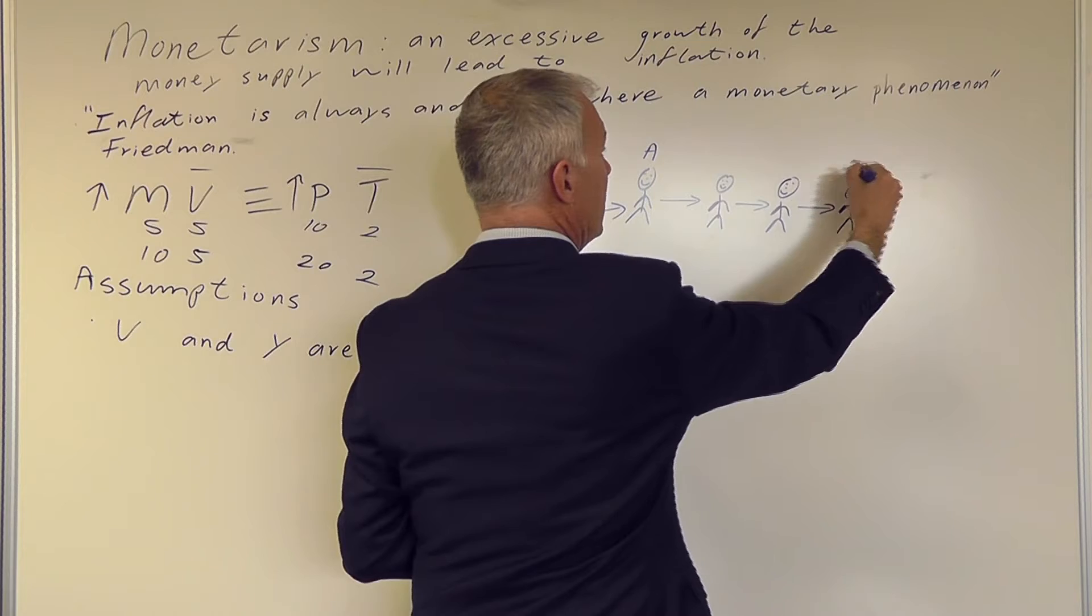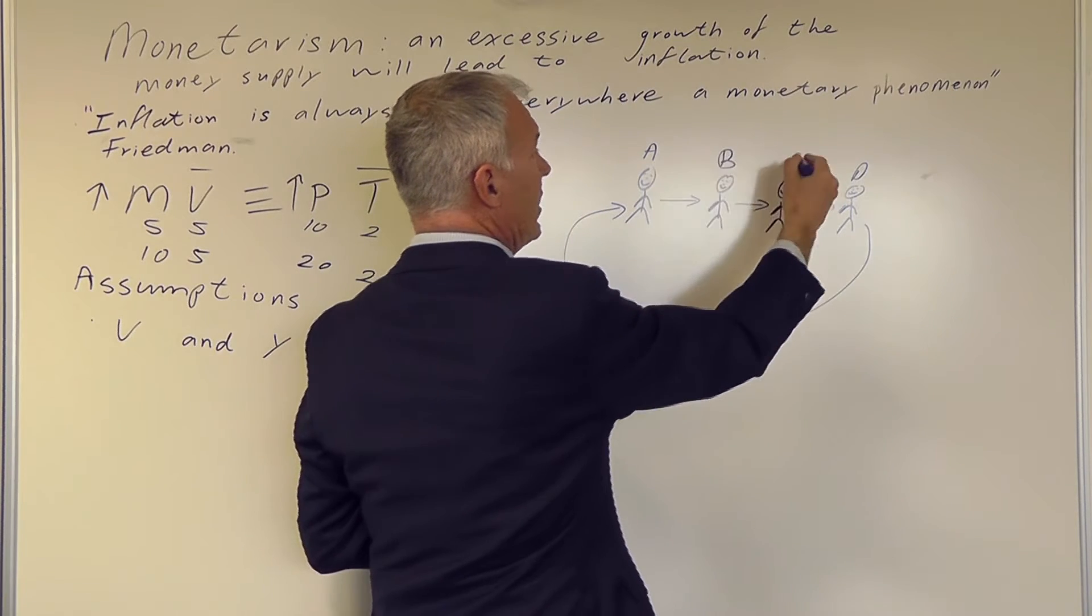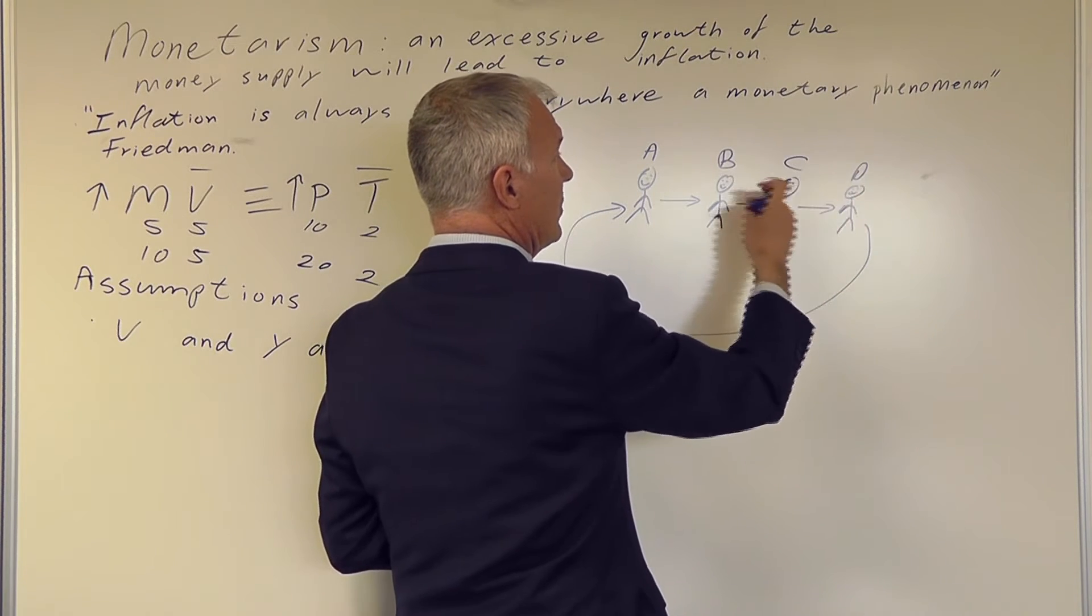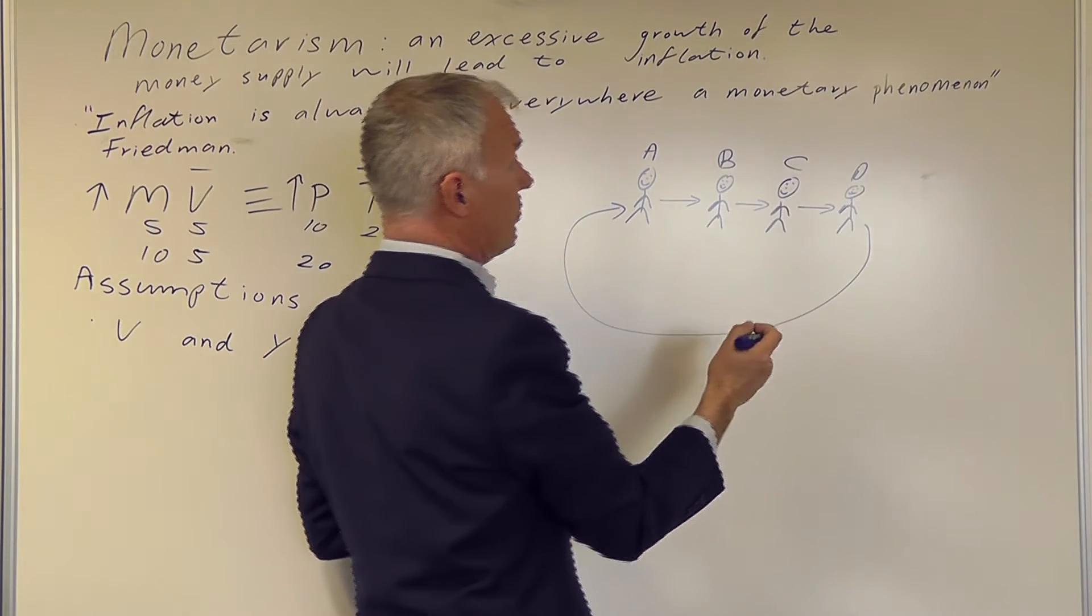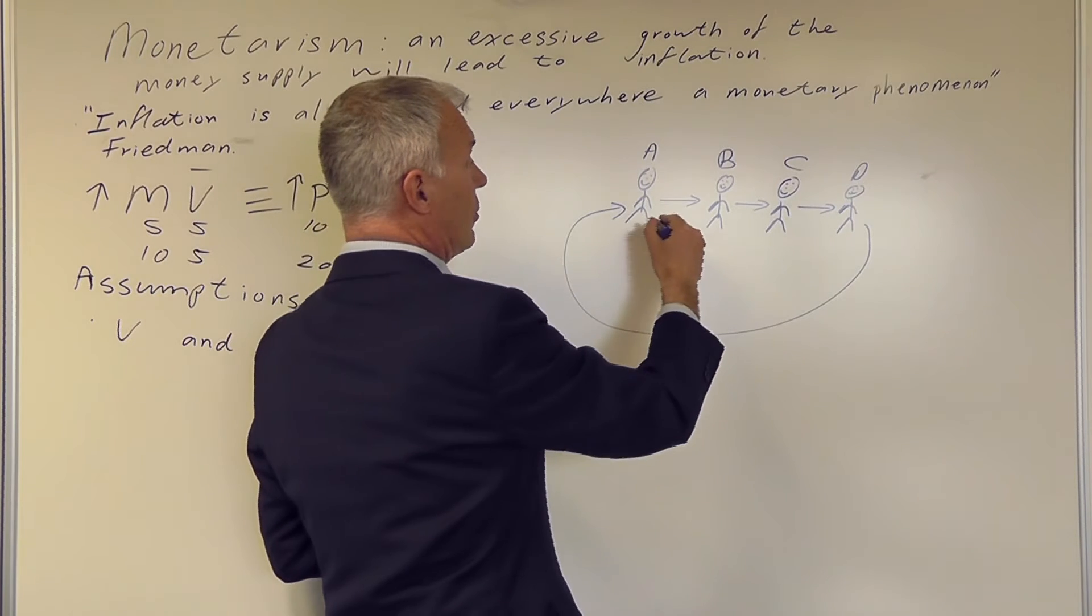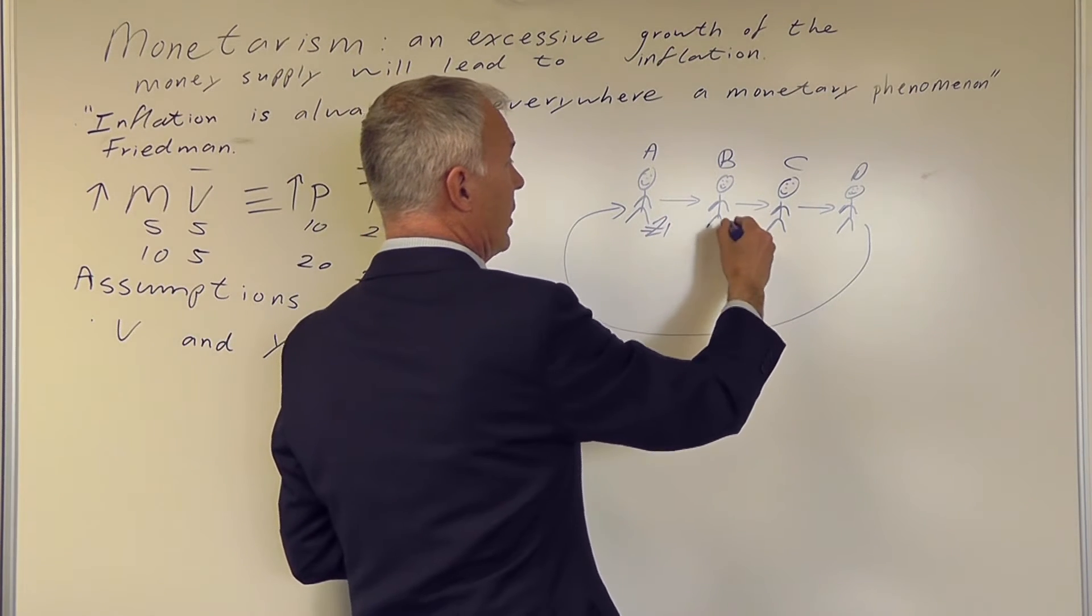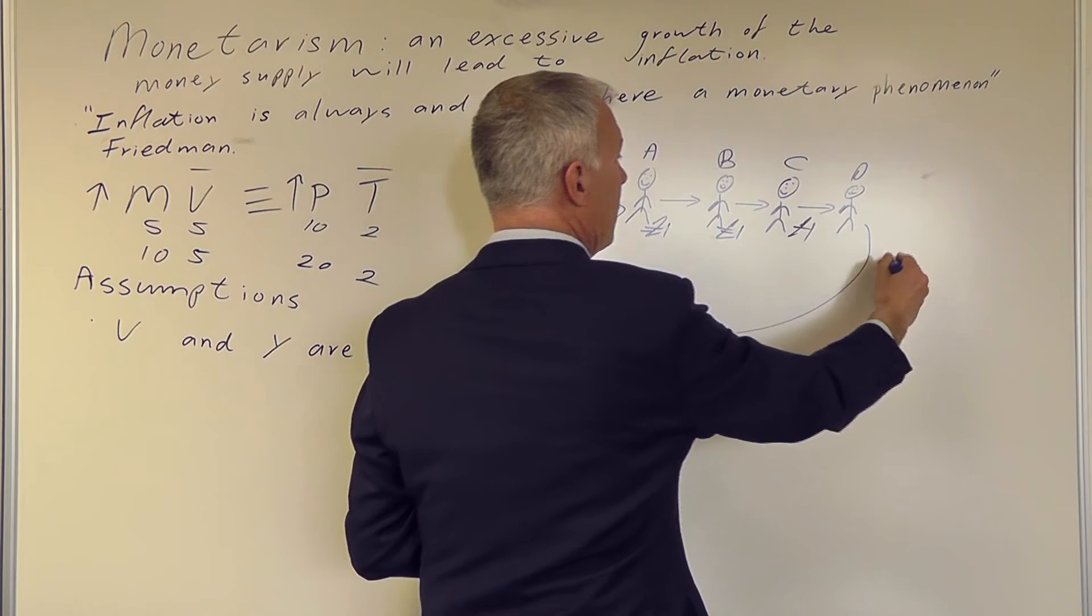So A buys something from D. B buys something from A. C buys something from B. And D buys something from C. Each of these cost £1.